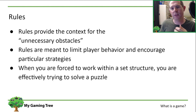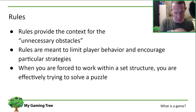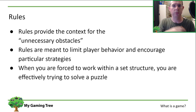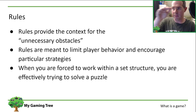Think about games you've played — what are the goals you're trying to accomplish? Then there are rules. These provide the context for those unnecessary obstacles. In Super Mario Brothers, the height of Mario's jump is a rule. Holding down the button to get different levels of height defines how your player character moves from one part of the level to the other. There are also rules of interacting with enemies.